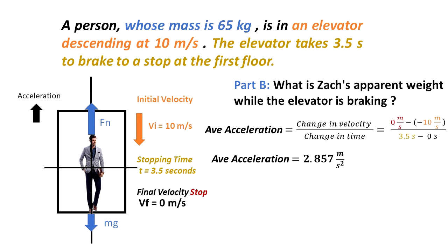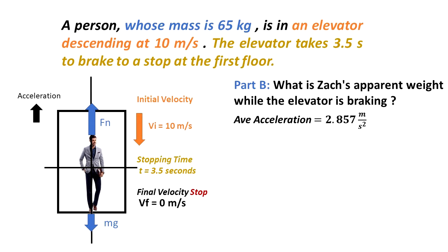This acceleration is going upwards in the direction of the net force and opposite to the initial velocity that is going downwards. The mg force on the man is still the same, but the normal force has to be higher because the normal force is the unbalanced force that's changing the man's velocity in the upward direction.